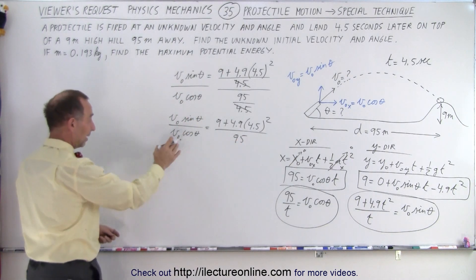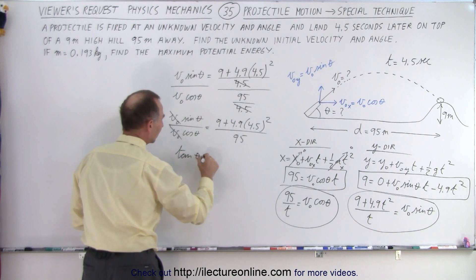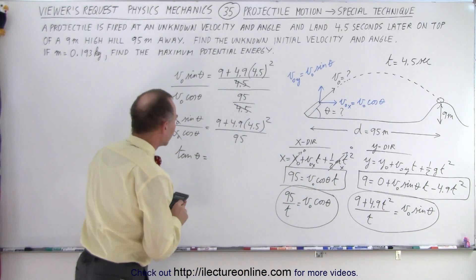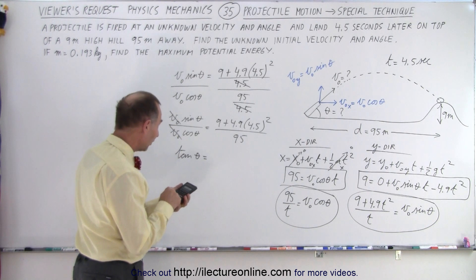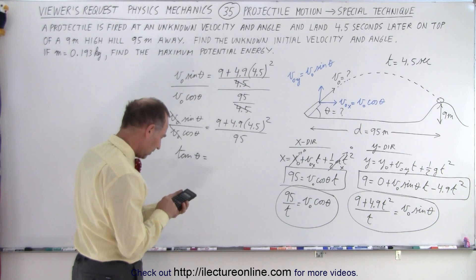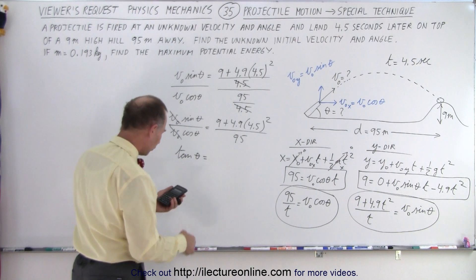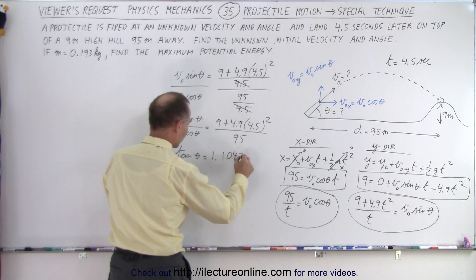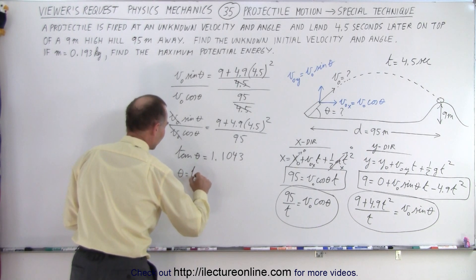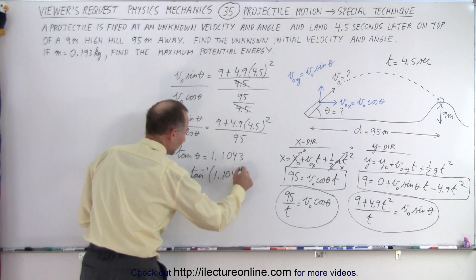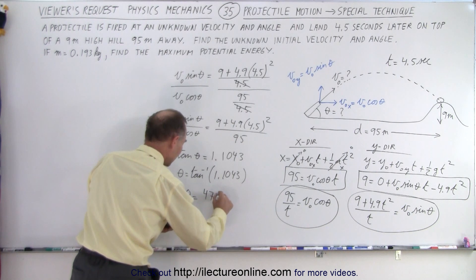Now we simplify. On the left side, v-initials cancel out and sine divided by cosine is tangent, so we have tangent of theta equals that expression. Evaluating the right side: 4.5² times 4.9 plus 9, divided by 95, gives 1.1043. Therefore theta equals the inverse tangent of 1.1043, which gives us theta equals 47.84 degrees. That's the first of our two unknowns.